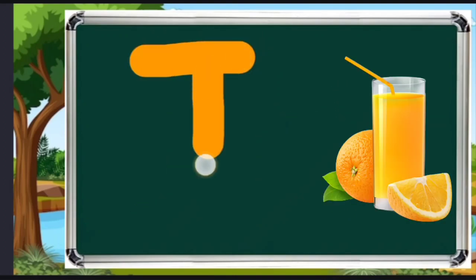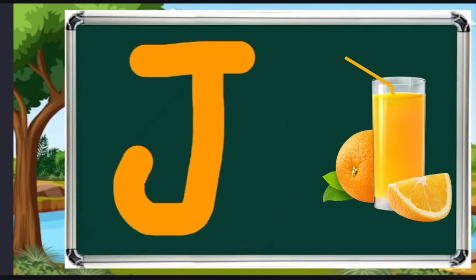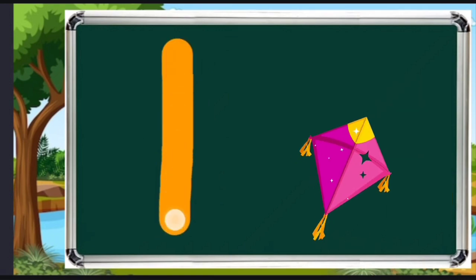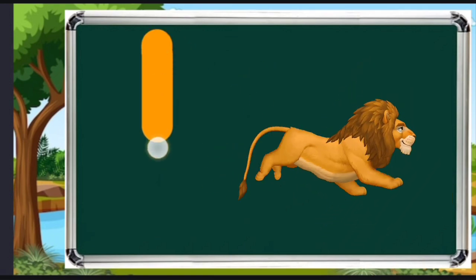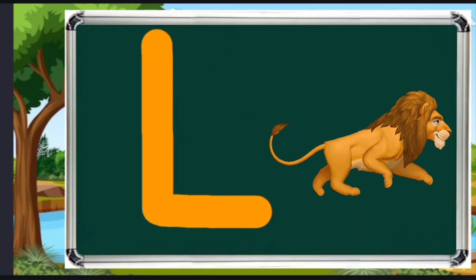I for ice cream, J for juice, K for kite, L for lion.